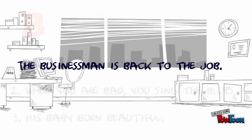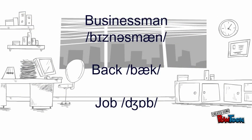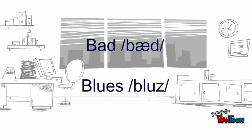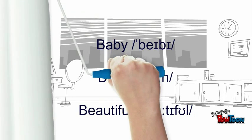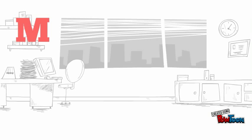Examples of the B sound: businessman, bag, job, bath, blues, baby, bond, beautiful. M — this is a voiced consonant and nasal sound.